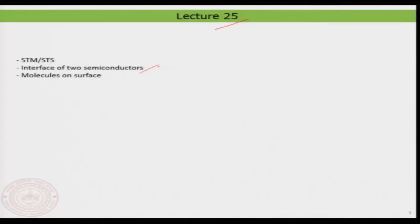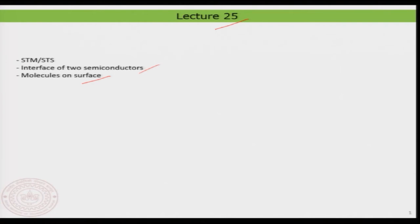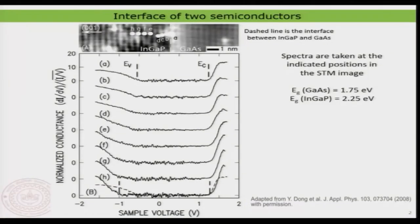First we will look into an interface of two semiconductors. This is a typical example I am showing — you can do this on any possible surface. Then we will switch to something called molecules on surfaces, and particularly I will be focusing on big molecules on surfaces like phthalocyanins, pentacenes and things like that. I will be looking at the spectroscopic aspect of the molecules on surface.